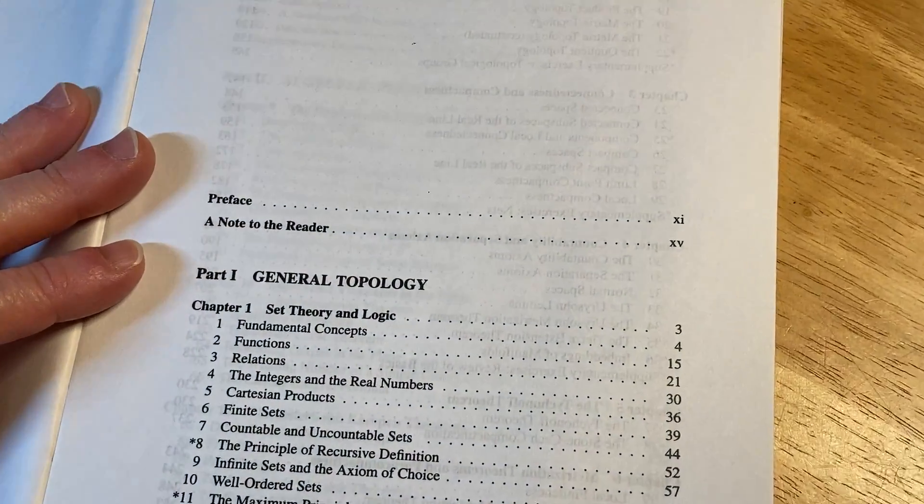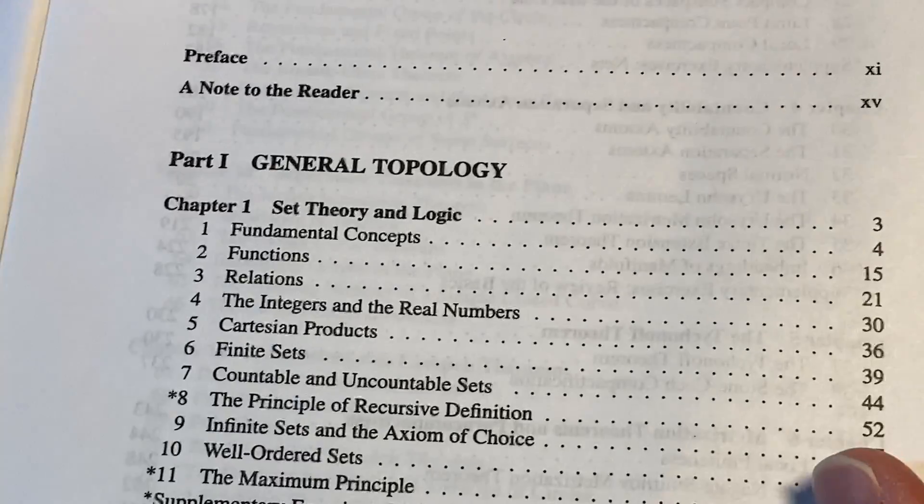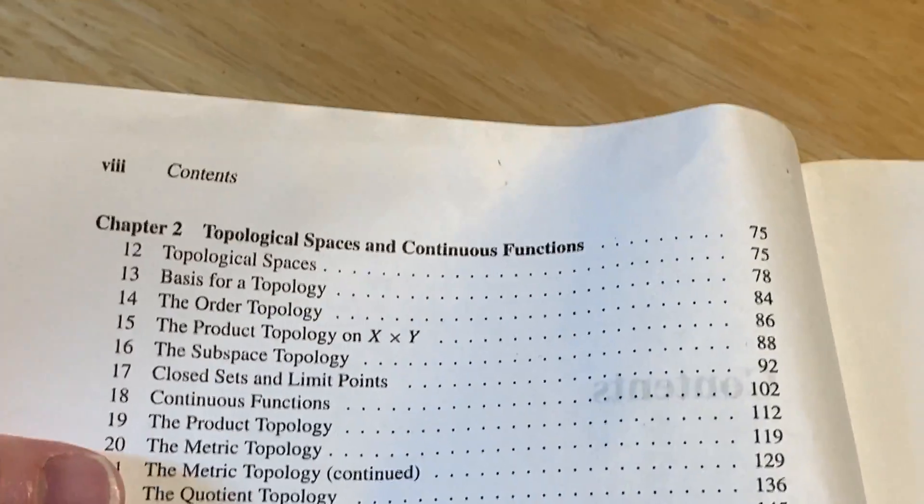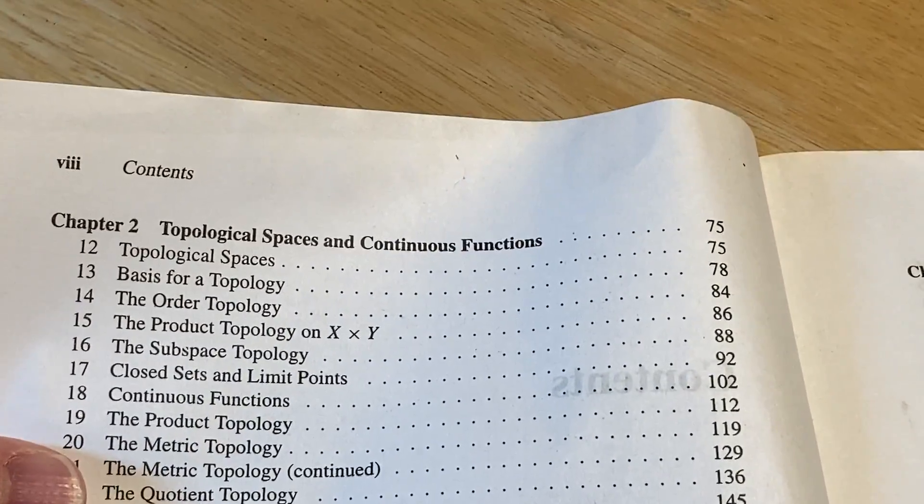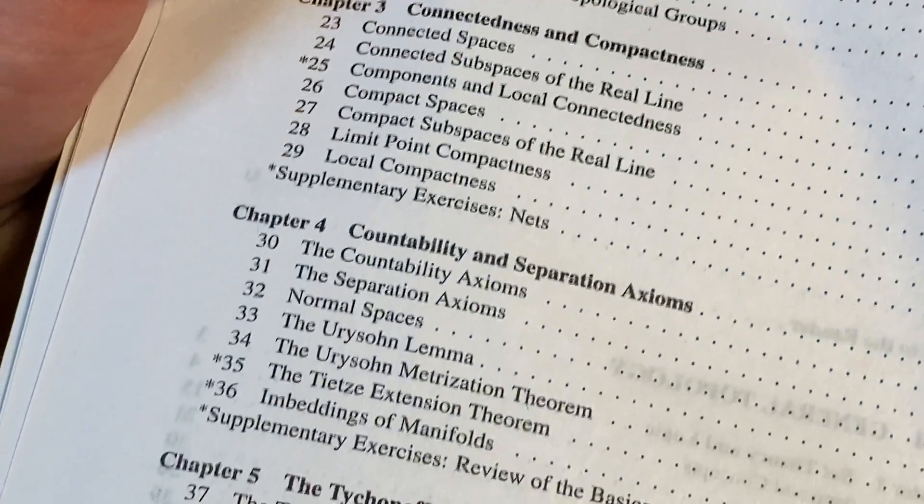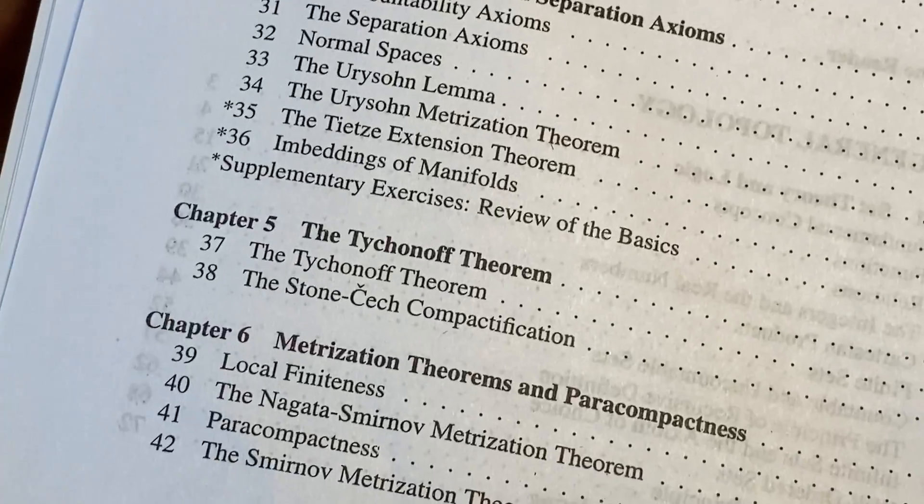Here's where it starts. General topology. It's very standard, very clear. And then we've got topological spaces and continuous functions, connectedness and compactness, countability and separation axioms, the Tychonoff theorem,